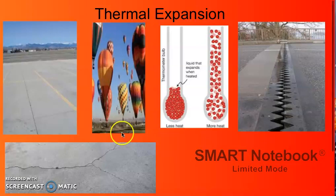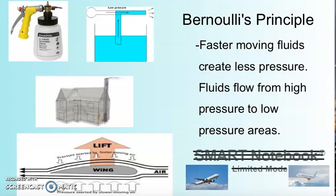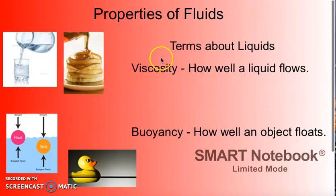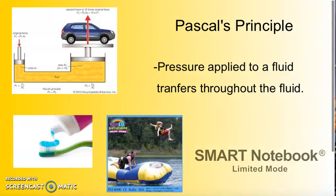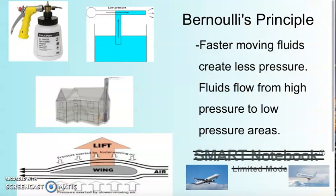That is just so cool. Hopefully you'll be able to remember the following things — the properties of fluids: viscosity and buoyancy are two properties of liquids. Archimedes' principle explains why something really big can float. Pascal's principle is why you can apply a little bit of pressure and get a lot of pressure out. And Bernoulli's principle tells us that faster moving fluids have less pressure, and you can actually manipulate things like an airplane wing to get lift as a result. Hope you learned a little bit about these items.